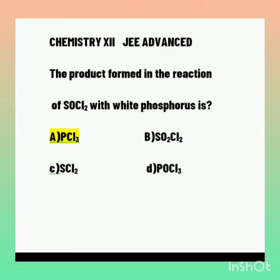Welcome, my dear students. Your question is: the product formed in the reaction of SOCl2 with white phosphorus is — first option PCl3, second option SO2Cl2, third option SCl2, last option POCl3.